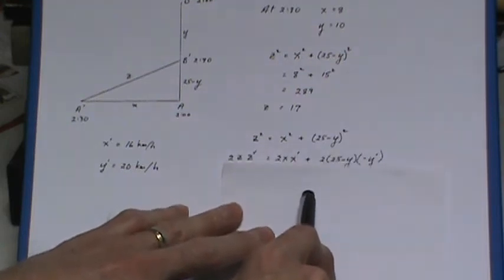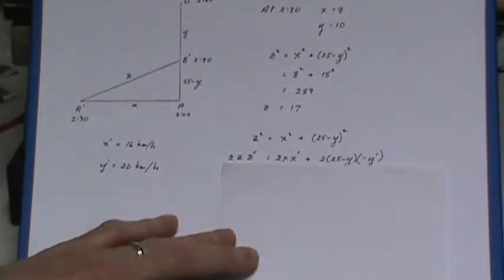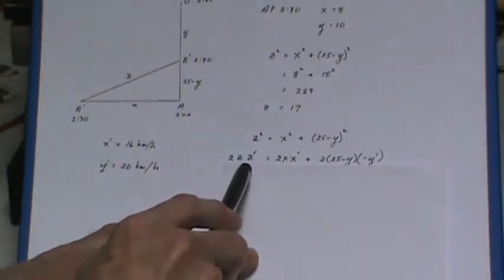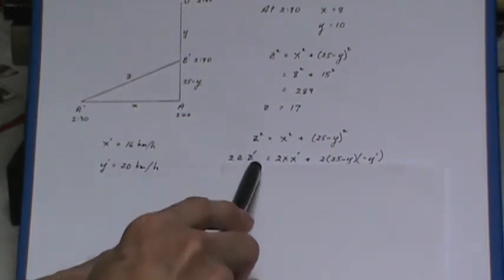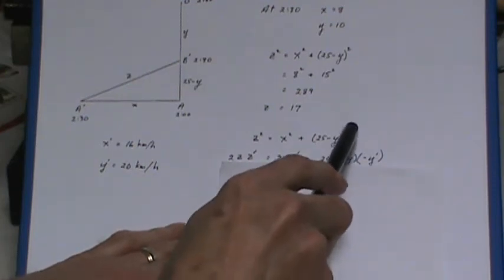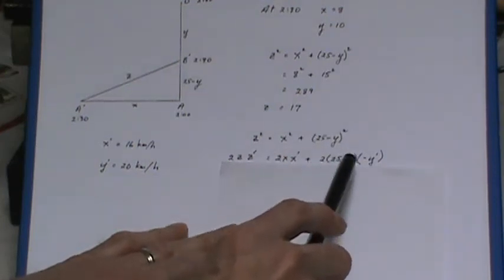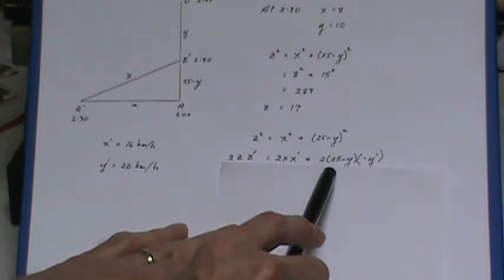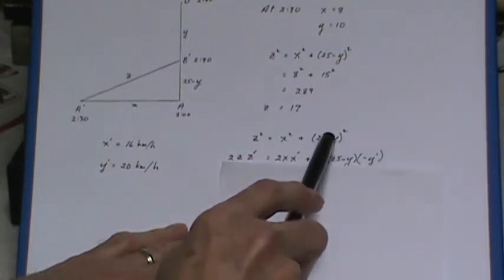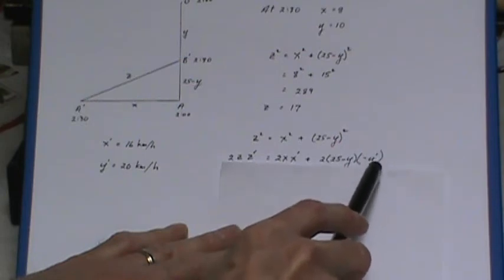Now when I do that, this is the only line in here that actually involves calculus. I'm doing a derivative with respect to time, so this is actually implicit differentiation. 2z·z' = 2x·x' + 2(25 - y)·(-y'). Now be careful here that 2 comes down in front of the bracket. Remember you're going to pick up a negative dy/dt.